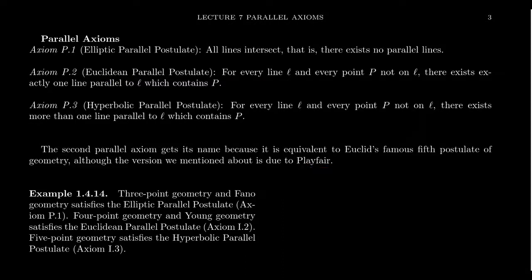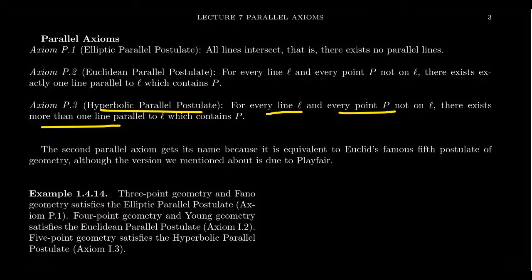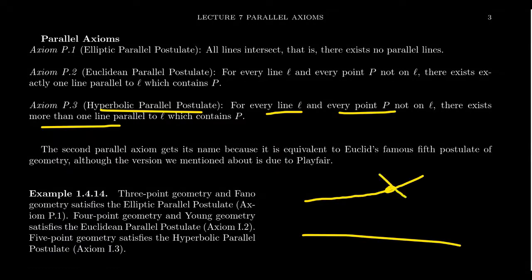The third parallel postulate we're going to take on is the hyperbolic parallel postulate, which says that for every line and every point not on that line, there exists more than one line parallel to it. So the hyperbolic parallel postulate guarantees the multiplicity of parallel lines — you could have multiple parallel lines through a point. It doesn't necessarily say how many there are, but there are more than one given any point.